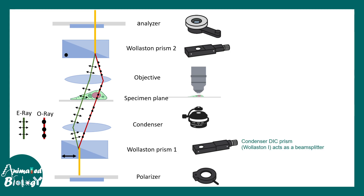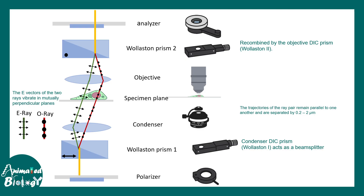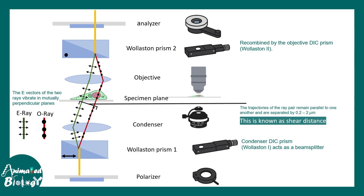The condenser DIC prism acts like a beam splitter, and the objective DIC prism works like a beam combiner. The trajectories of the O rays and E rays — ordinary and extraordinary rays — are separated by 0.222 microns, which is less than the resolution limit. This distance is known as the shear distance. The smaller the shear distance, the greater the resolution and the crisper the image.